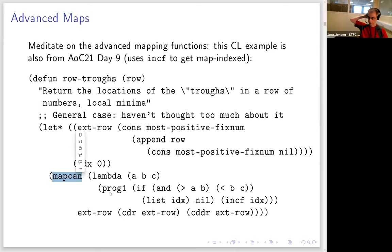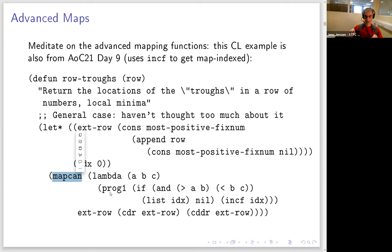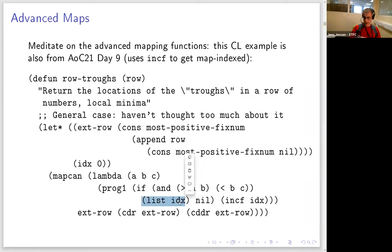This brings us to mapcan. Mapcan works exactly like mapcar except it expects the function to return a list at all times, and those lists are nconc'd together. Where mapcar creates a list of function return values, mapcan splices those lists together. The effect is that the function can return one element or zero elements: returning nil (the empty list) means that element is absent in the final result.